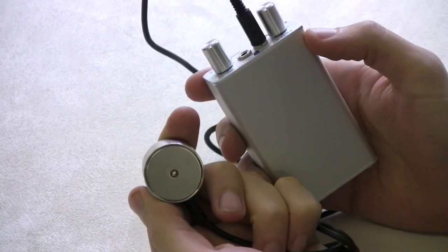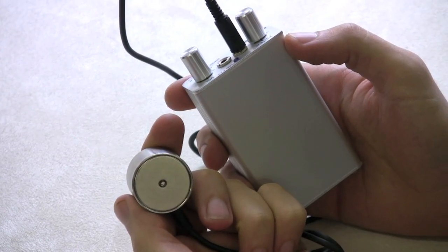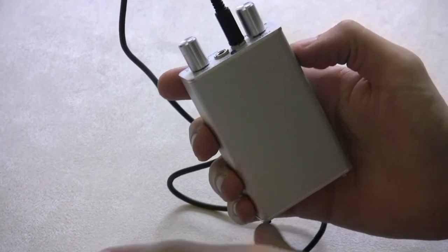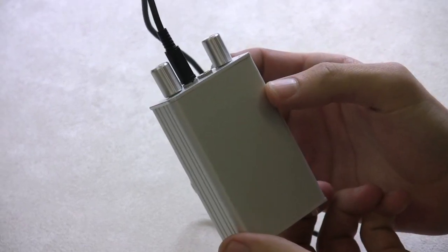Built into a sturdy brushed aluminum case, the Listen Through The Wall device allows the user to pick up audio vibrations through up to 30cm of studded, cavity, or solid wall.